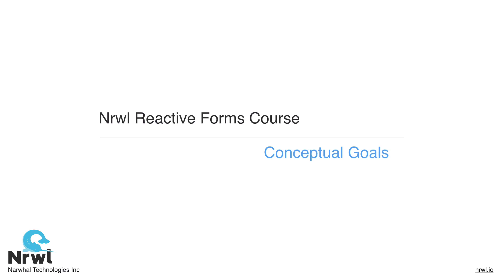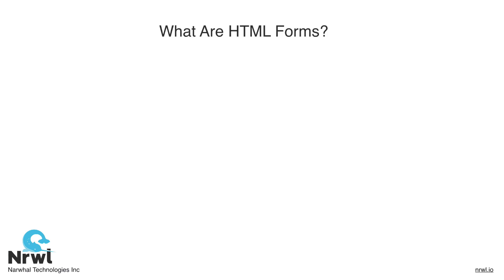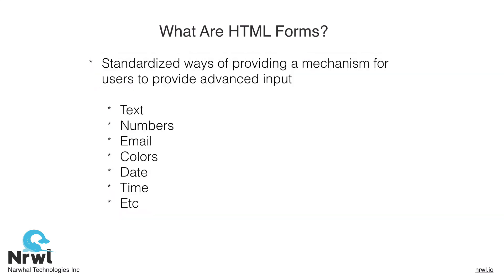Let's discuss our conceptual goals for this course. So what are HTML forms? HTML forms provide a standardized way of providing a mechanism for users to provide input on the web platform. For example, on the web platform there are standardized ways for users to input text, numbers, email, color, dates, times, etc. These are all built into the web platform. In this way, we see that even with vanilla HTML, we have support for allowing a user to input various types of data.